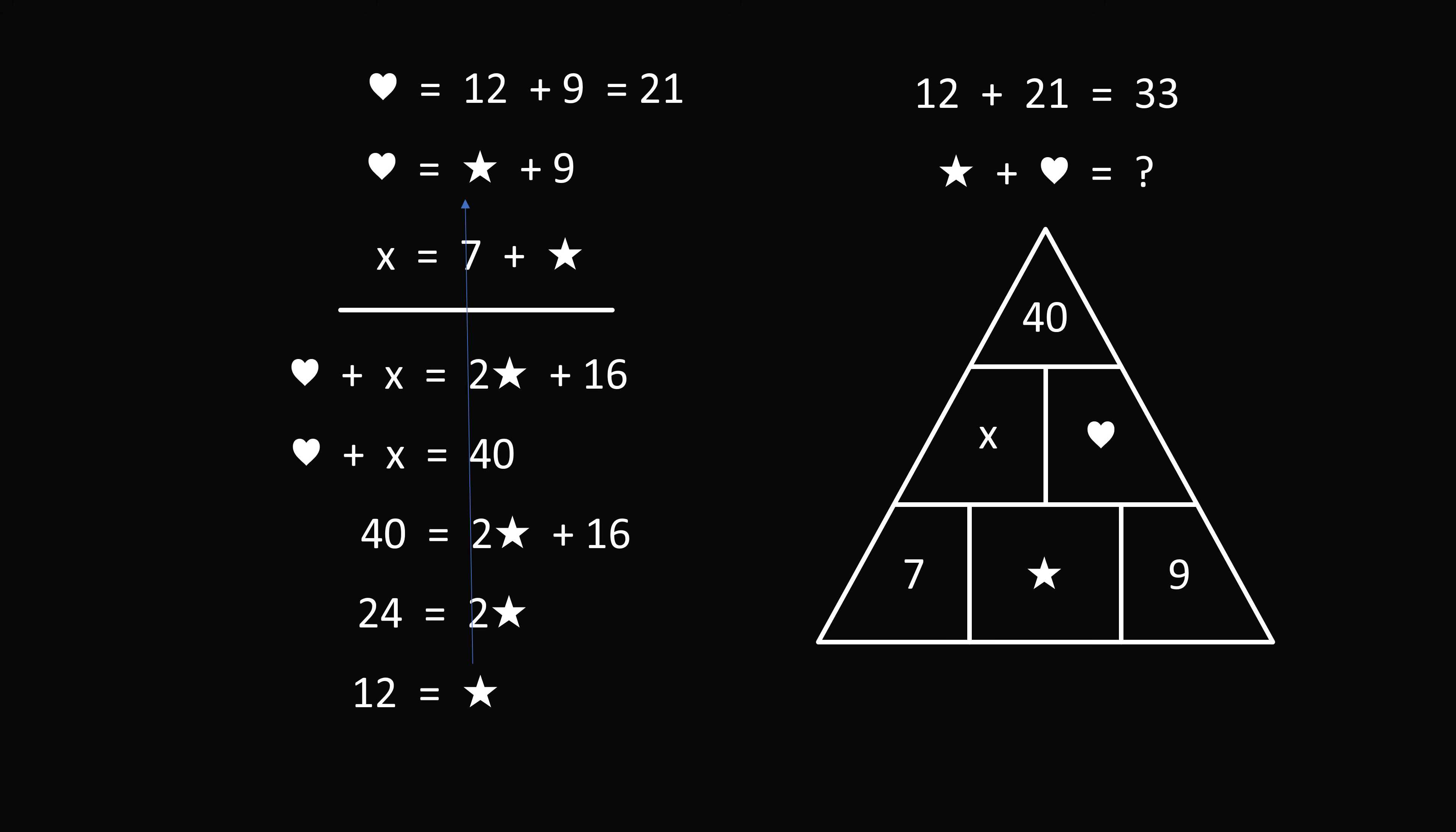But this is far too much work for 9 year olds. The clever student would approach it in a slightly different way. We don't need to know the values of star and heart. We only need to know their sum. So how can we figure that out?